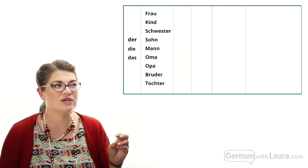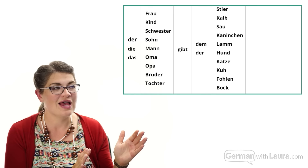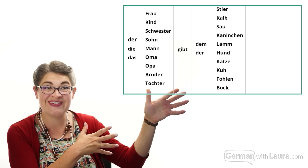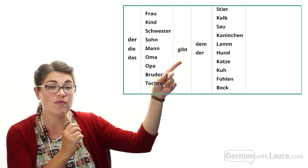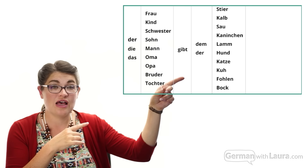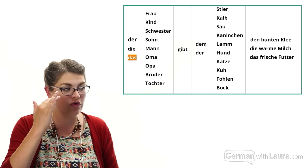This is our final drill — drill number six. We still have der, die, das and the same family members. Now a new verb: 'gibt,' meaning 'gives.' We have the dative case — the same barnyard animals from before, but now in the dative case as indicated by 'dem' for masculine and neuter nouns and 'der' for feminine nouns. And there are three accusative options for the final column: a masculine option, a feminine option, and a neuter option.